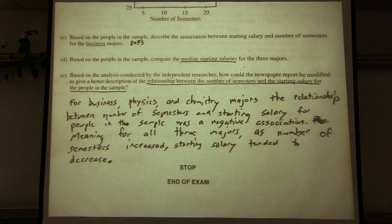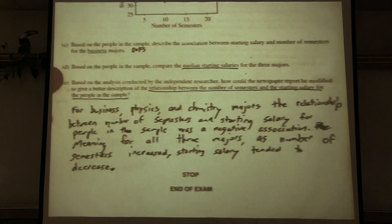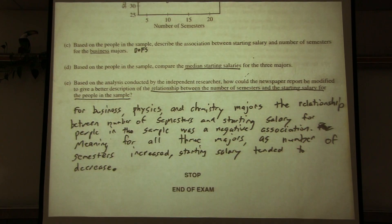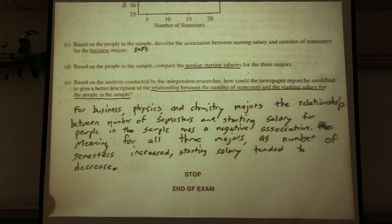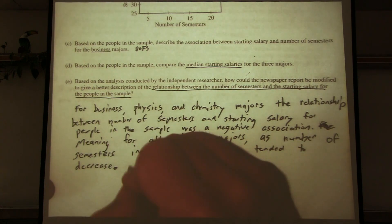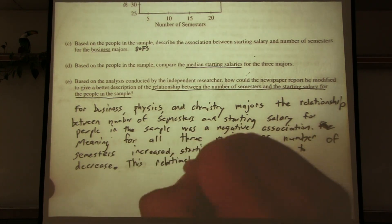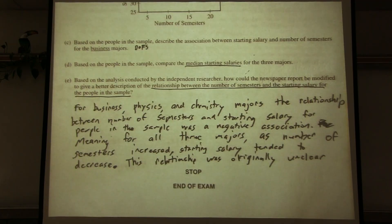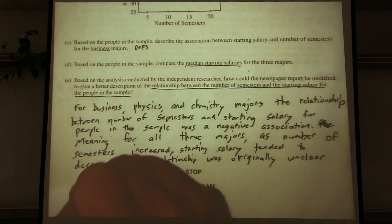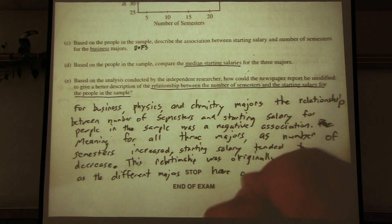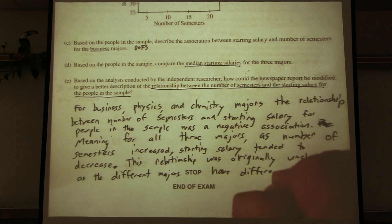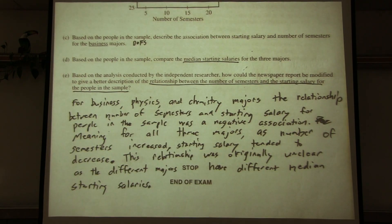Additionally, we could incorporate what we saw in Part D — that some majors simply have higher median starting salaries than others. This relationship was originally unclear because the different majors have different median starting salaries, which masked the negative relationship within each major when the data were viewed together.